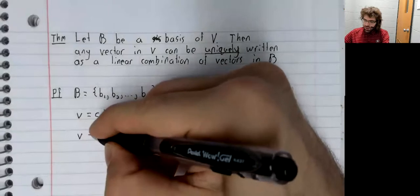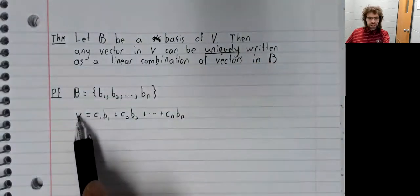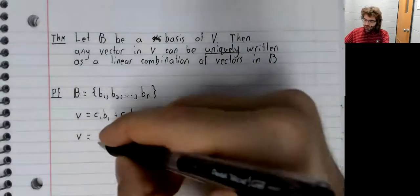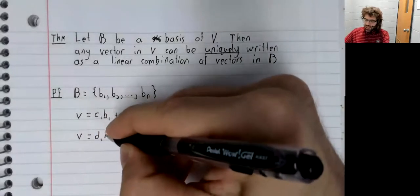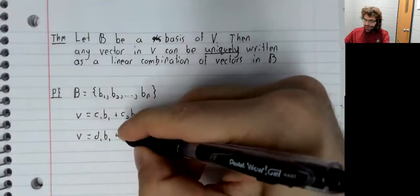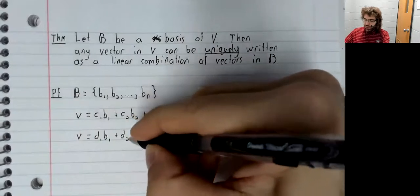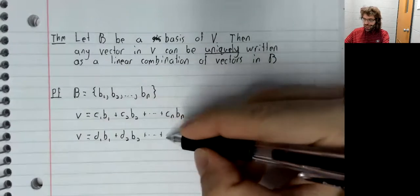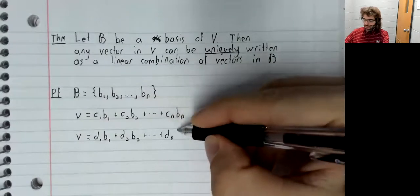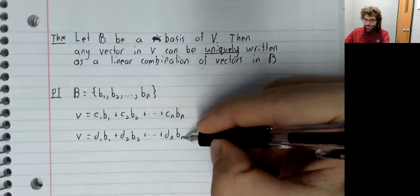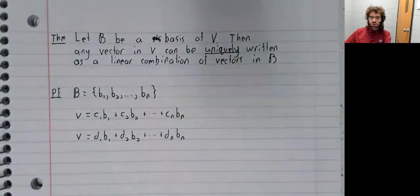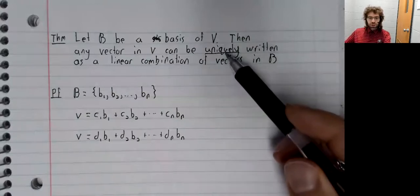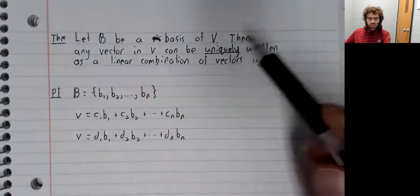Suppose that this same vector could be written as a different linear combination of these vectors. Our claim is that that's impossible, that there is only one way of doing this.